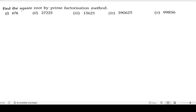Find the square root by prime factorization method. Prime factorization means we should get the product of prime numbers. For this, we will take out the factors of the given numbers. Let us start the solution — first we will solve the first bit.